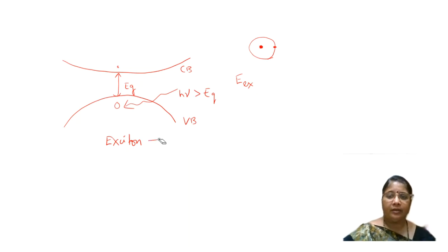This exciton is a quasiparticle. What is a quasiparticle? It is neither stable nor unstable. It can either move away or it can collapse back. It is just waiting for an opportunity to do one of these. This has an energy EEX which has been actually taken from this H nu.